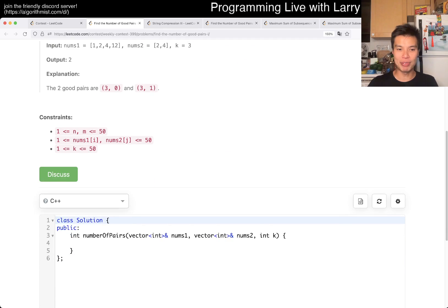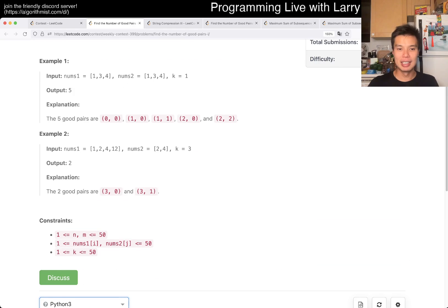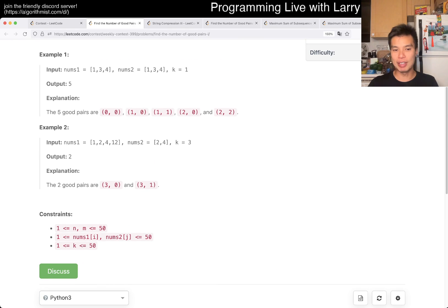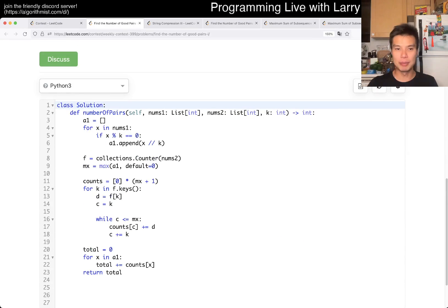This one is pretty straightforward in the sense that N and M is 50, so you don't have to do anything funky, just do all the for loops and you'll be... oh, what the?